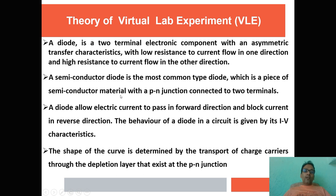A diode is a two-terminal electronic component with an asymmetric transfer characteristic — low resistance to current flow in one direction (forward direction) and high resistance in the other direction. A semiconductor diode is the most common type of diode.